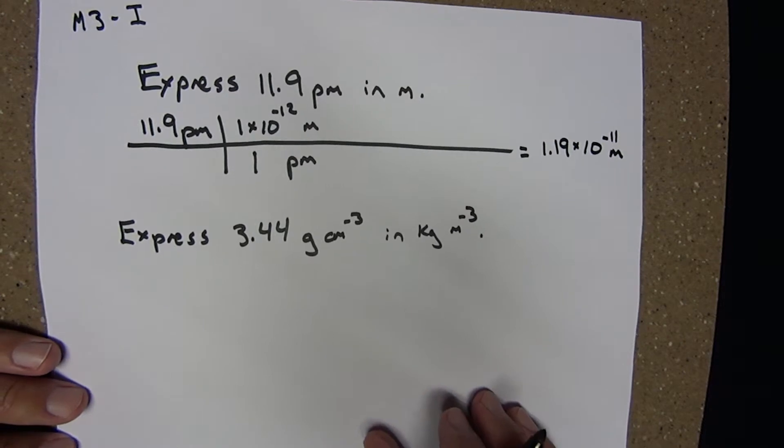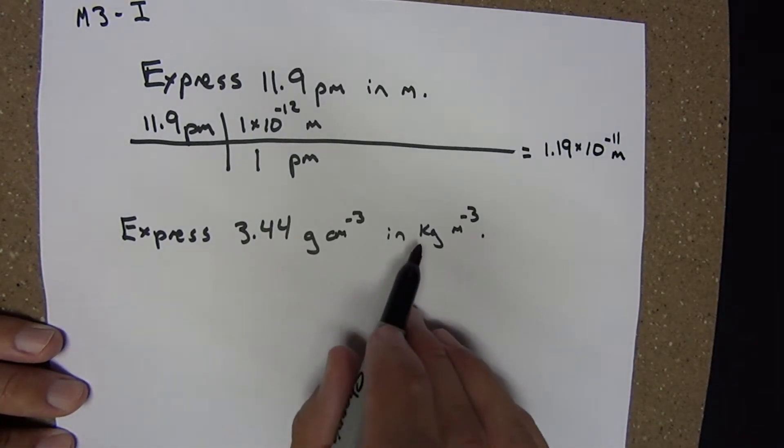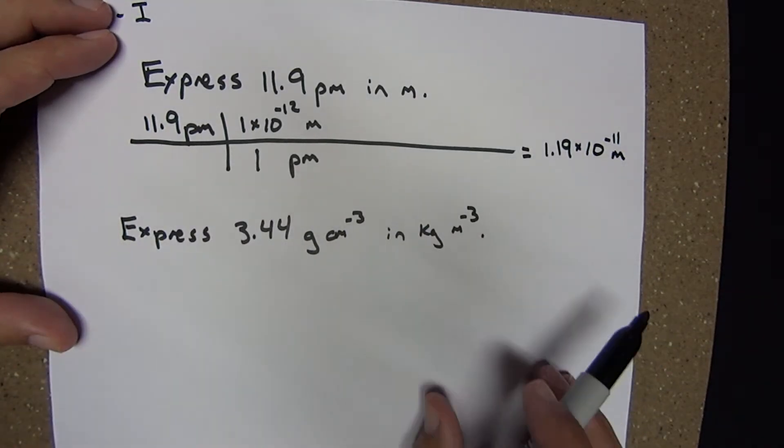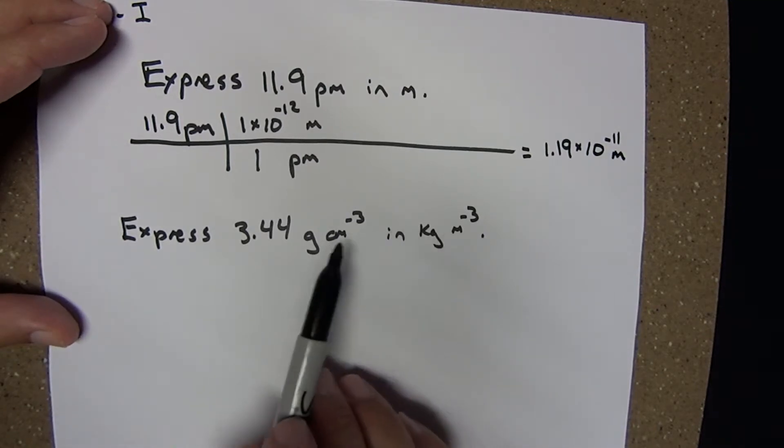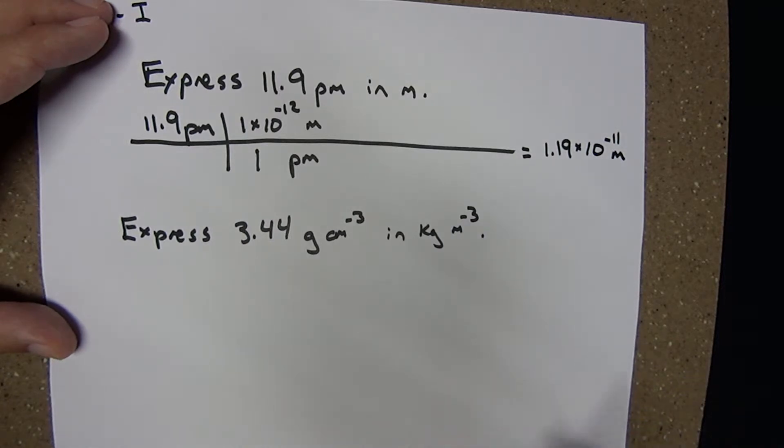Next, we're asked to express 3.44 grams per cubic centimeter in kilograms per cubic meter. Before using our factor-label system, let's find the volume conversion, starting with the length conversion.